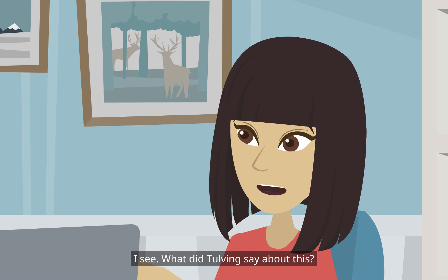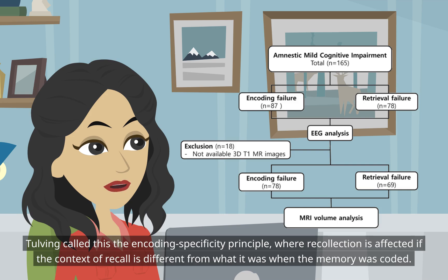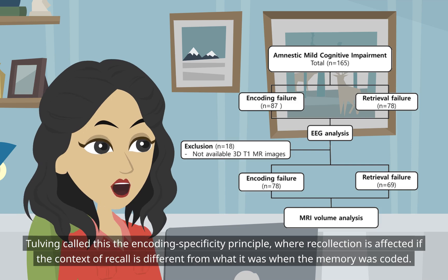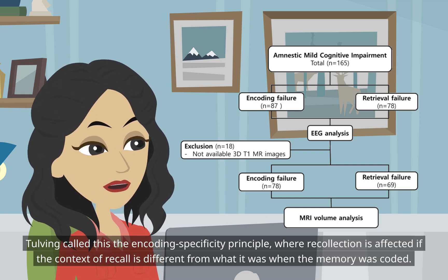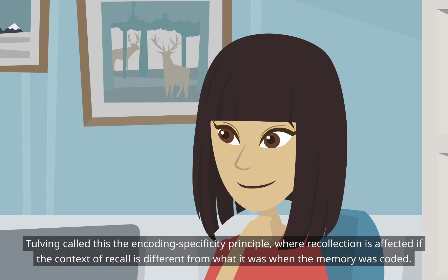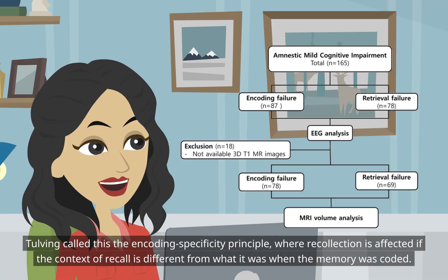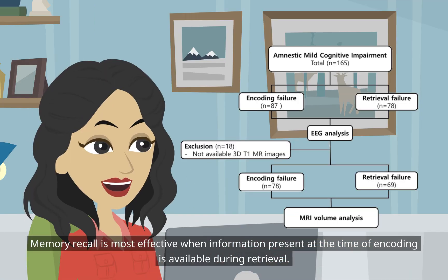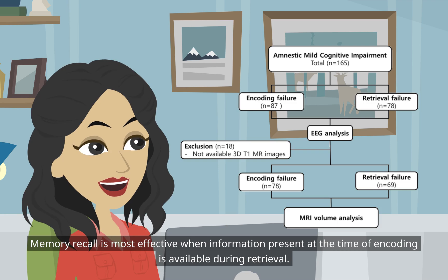What did Tulving say about this? Tulving called this the encoding specificity principle, where recollection is affected if the context of recall is different from what it was when the memory was coded. Memory recall is most effective when information present at the time of encoding is available during retrieval.